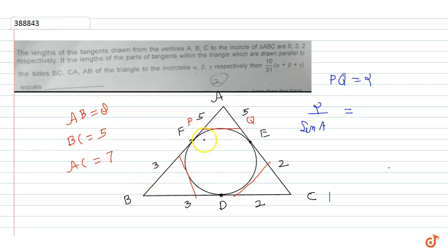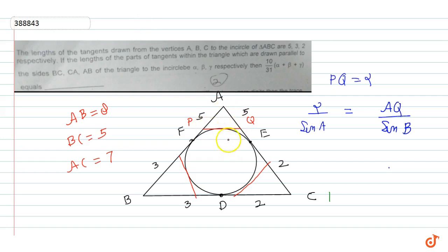If we apply the sine rule, alpha upon sin A is equal to... Now we have angle APQ which is equal to angle ABC because both sides are parallel. So we use similar triangles. AQ upon AB equals sin B. Now if I look at triangle APQ, this is our incircle of radius r.